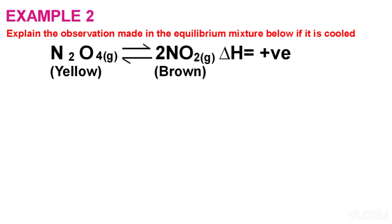Note the following: when the forward reaction is favored, the observation is either the brown colour of gas intensifies, or the yellow colour of gas fades, or the yellow colour of gas changes to brown. When the backward reaction is favoured, the observation will be either the brown colour of gas fades, the yellow colour of gas intensifies, or the brown colour of gas changes to yellow.